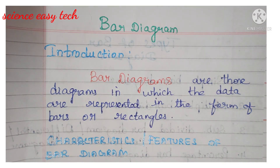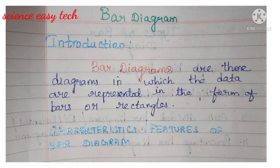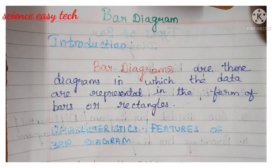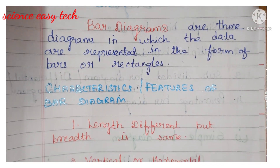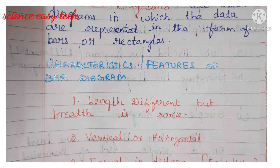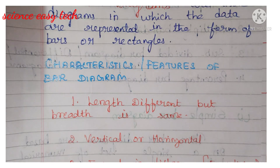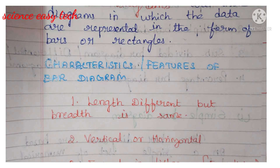Now we will see the characteristic features of a bar diagram. The first feature: the length is different but the breadth is the same. The length of your bar diagram will be varying, but the breadth is the same.